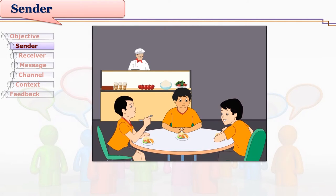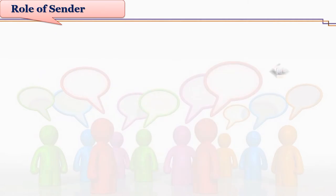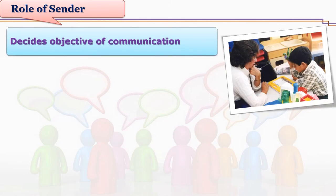When Raghav's friends want him to join for a picnic and they start describing the picnic spot while sitting in the canteen, they are the persons describing it with some intention in mind. Whenever a sender initiates dialogue, he, she, or the group has some intention in mind, and to fulfill that intention or achieve some effect, they initiate the communication. So they are the senders of the communication.